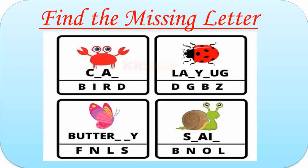Here are some insects or creatures. First one is Crab. Missing letters are A and B. C-R-A-B. Crab. Second one is Ladybug. Missing letters are D and B. L-A-D-Y-B-U-G. Third one is Butterfly. Missing letters are F and L. B-U-T-T-E-R-F-L-Y. Butterfly. Fourth one is Snail. Missing letters are N and L. S-N-A-I-L. Snail.